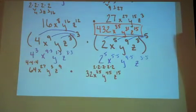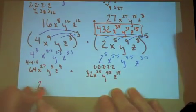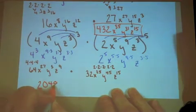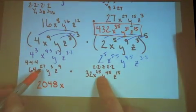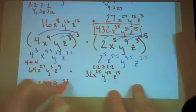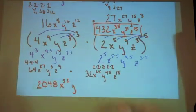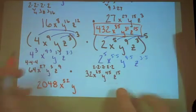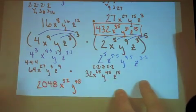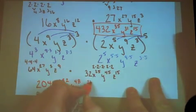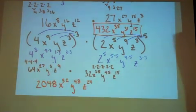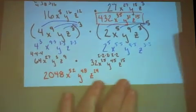So now we need to find out what 64 times 32 is. The handy dandy calculator tells me that that is 2,048. x to the 27 plus 25, that's 52. y to the 3 plus 45, that's 48. z to the 9 plus 15, that's 24. There you go.